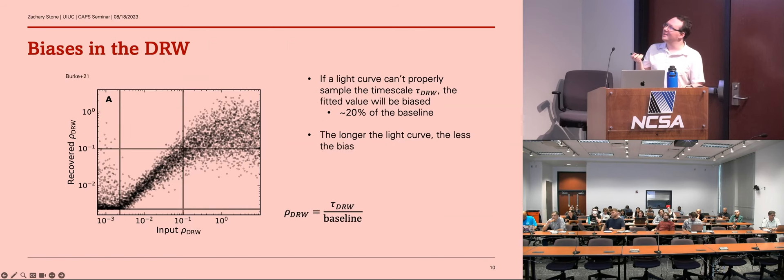Well, there are a bunch of problems with the DRW, which has been springing up in recent years. But one of the main problems is bias in the extracted parameters that we're getting. So this is another plot by Colin showing the input tau parameter against the recovered tau parameter. And this is just a way to present it here where it's the tau parameter over the length of the light curve. And we can see that as if the tau parameter is too large relative to the length of the light curve, or we're not sampling this timescale properly, the recovered tau parameter is biased to around 20% of the baseline of the light curve you're observing.